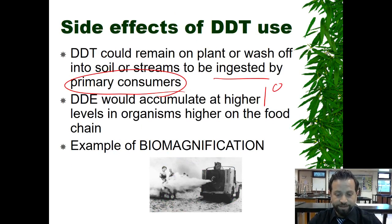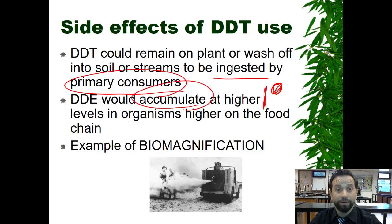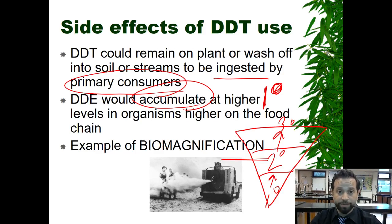What are some side effects of DDT use? It could remain on the plant, or it could wash off into soils or streams, and then be ingested by primary consumers. It can accumulate — which is another reason it's called bioaccumulation — at higher levels in organisms higher up on the food chain. Going from primary to secondary to tertiary consumers, the concentration is actually getting bigger as it goes up the food chain.